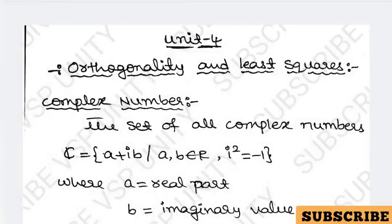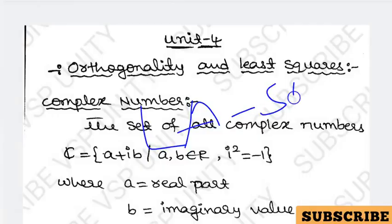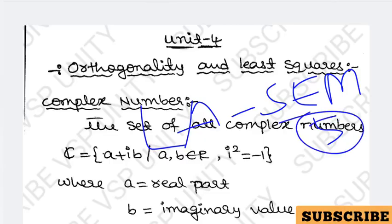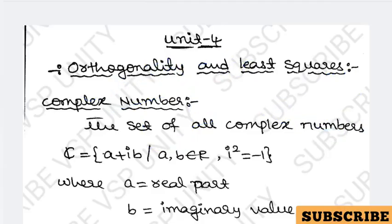Hi everyone, Unit 4 of Linear Algebra. We have already completed Unit 2. Now coming to Unit 4, the name of the unit is Orthogonality and Least Squares.